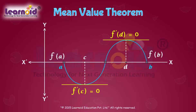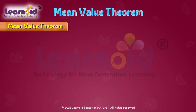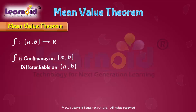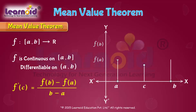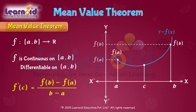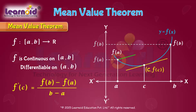Another important theorem is the Mean Value Theorem, which states that there exists some c in (a, b) such that f'(c) is equal to f(b) minus f(a) divided by b minus a. f'(c) is the slope of the tangent to the curve y = f(x) at x = c. There exists a point (c, f(c)) on the curve such that the slope of the line from (a, f(a)) to (b, f(b)) is the same as the tangent at c.